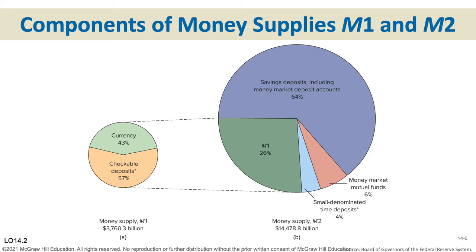This graphic gives you a picture that the kind of money we're talking about, M1, just fits in that little green section of the overall big circle. So currency and checkable deposits — you don't need to know the exact percentages, as that varies from year to year. What's important is that M1 is a very narrow definition of money, and the whole pie of money is much larger than that.